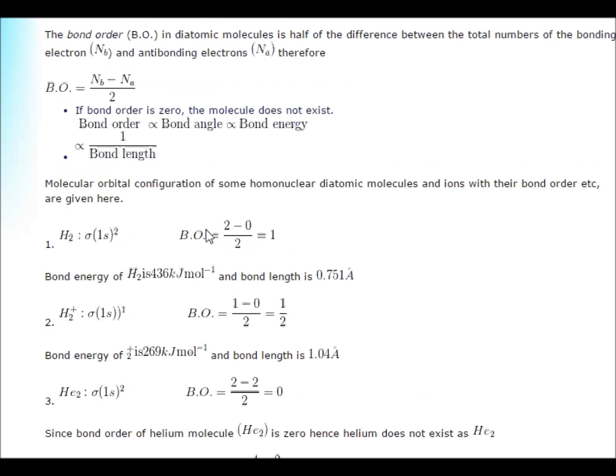Bond order is number of bonding electrons minus number of anti-bonding electrons divided by 2. You know the simple formula. And bond order is inversely proportional to bond length.